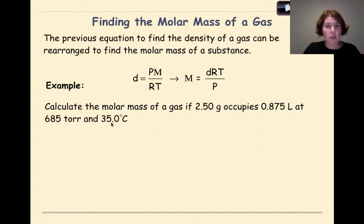If we look at this first example, it says calculate the molar mass of a gas if 2.50 grams occupies 0.0875 liters at 685 torr and 35 degrees Celsius. So I'm going to start by rewriting my formula, molar mass equals density times gas constant times temperature all over pressure. Now, one thing that I want to note here is that if I take the density formula, another way that I can represent this is by saying density is grams over liters, and those two things are given to me here.